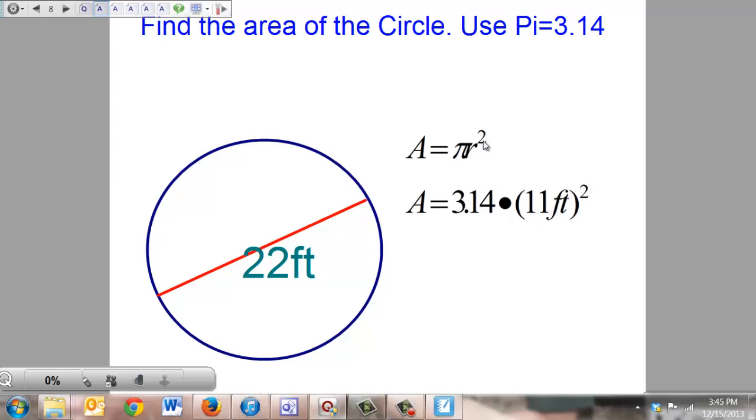Now remember, we're squaring the feet, so just like back when we were using the Pythagorean Theorem, we have to put everything the radius is inside the grouping symbols. The radius is not 11, the radius is not feet. The radius is 11 feet, so 11 feet goes in the grouping symbol and the whole thing gets squared.